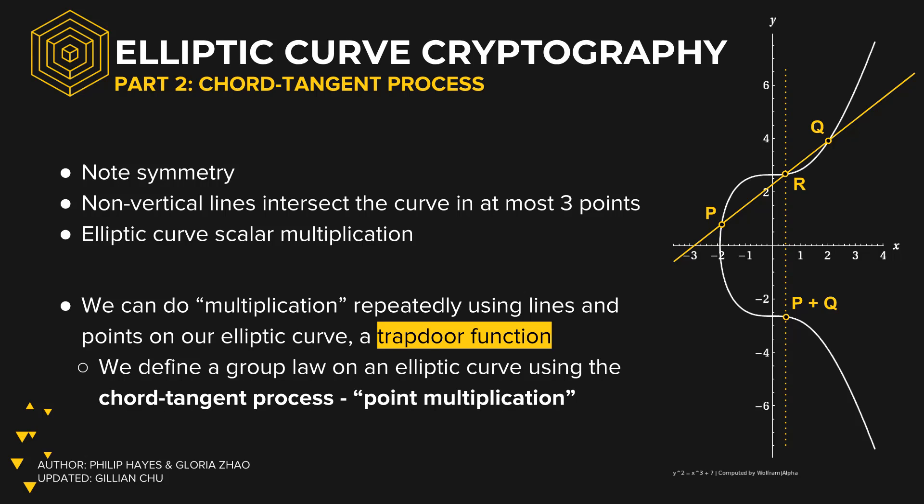This is a trapdoor or one-way function because given a point K that is P plus Q, it is difficult to find the individual points P and Q.